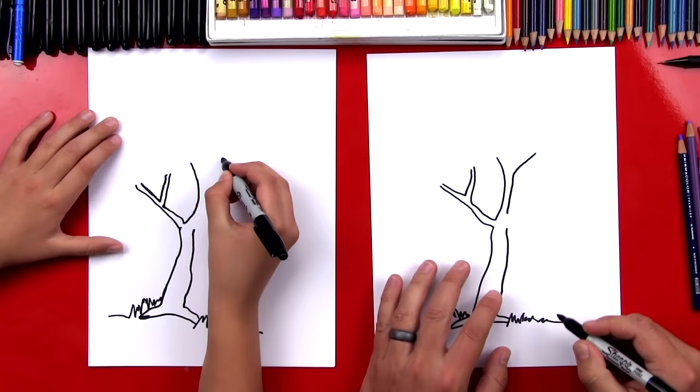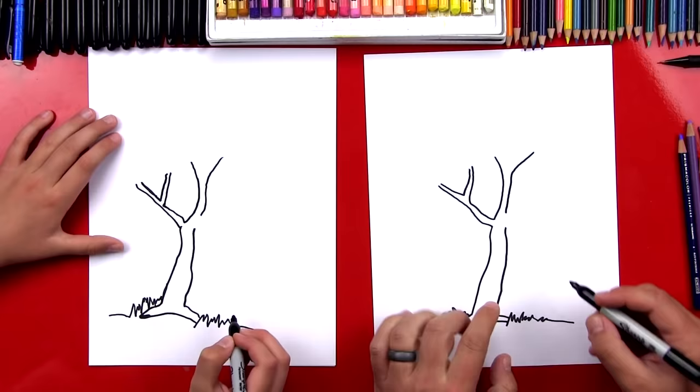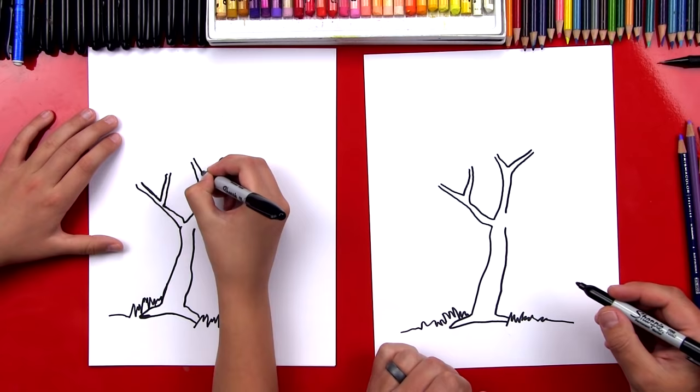Now I'm going to draw a line that comes out like this and comes back down. It's starting to come down here and gets close to touching. And then let's draw the inside of these branches. It's looking cool.